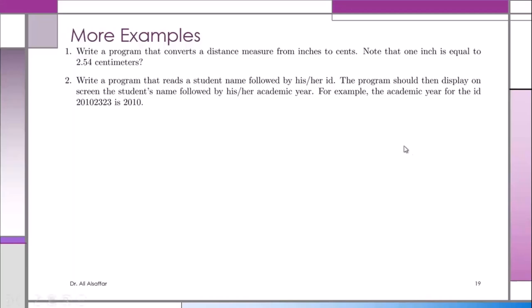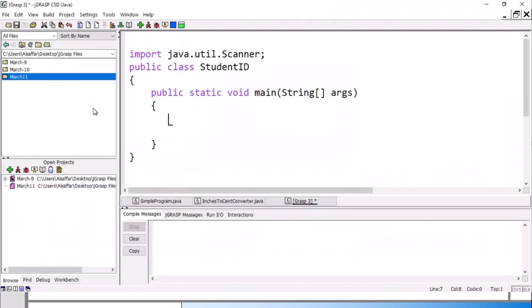We need to write a program that reads a student name followed by their ID, then displays on the screen the name followed by the academic year. The academic year will be taken from the ID — it will be the first four digits. I'll show you the trick using an arithmetic statement. Let's go to jGRASP.